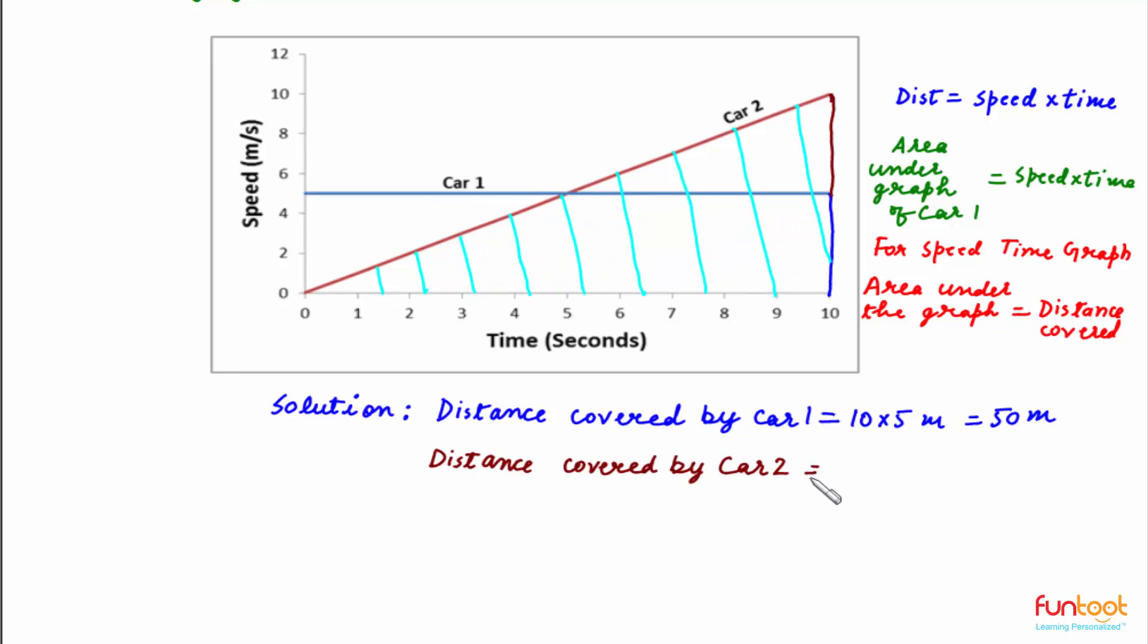Distance covered by car 2 will be the area of this triangle, which is the area under the graph, which is shaded in blue here. And formula for area of this triangle is half base into altitude. This will be half base here is 10 multiplied by altitude here is also 10. This will be 100 by 2 meters, which is equal to 50 meters.